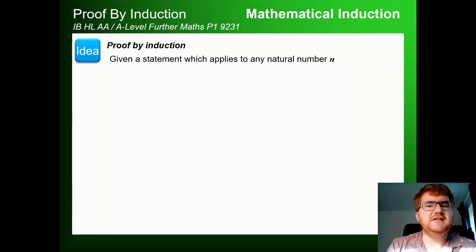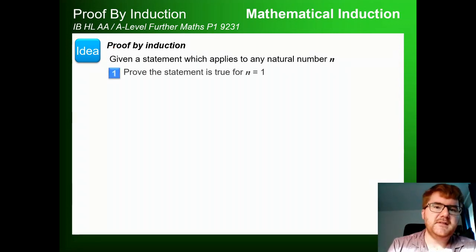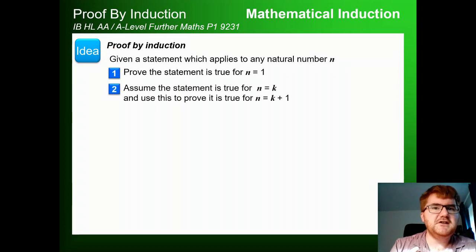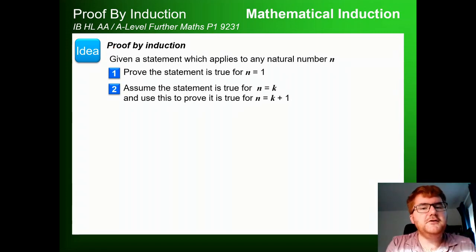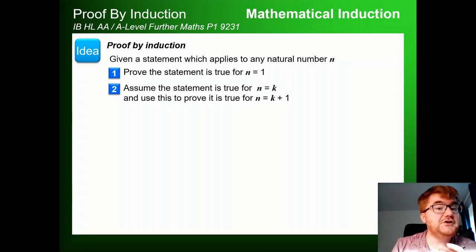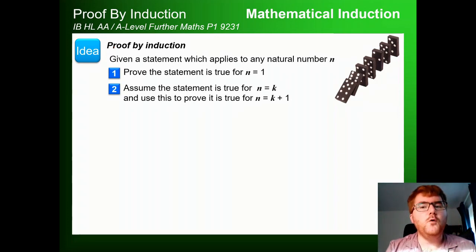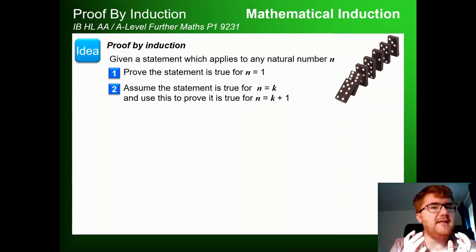What is proof by induction? Given a statement which applies to any natural number n, we first show the statement is true for n=1. Then we assume the statement is true for n equals some value k, and use that assumption to prove it's true for n=k+1. If both steps are true, it has a domino effect — knowing it works for n=1 and that k implies k+1 means it's true for all values of n.